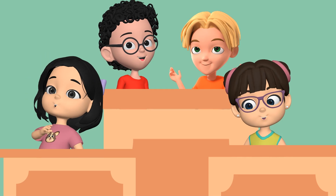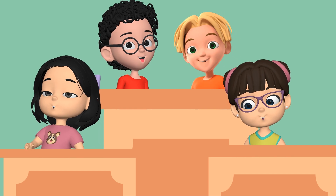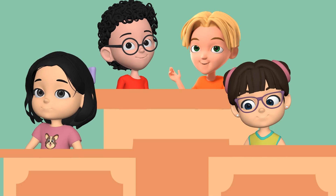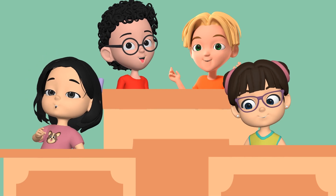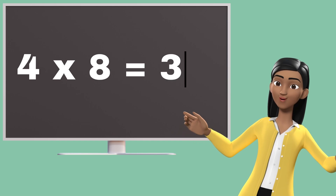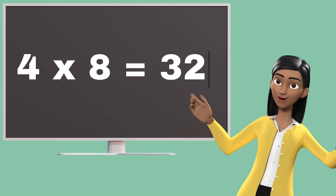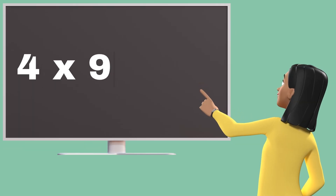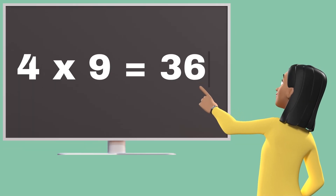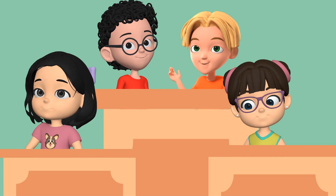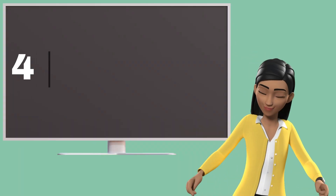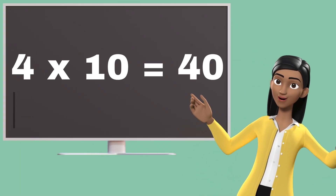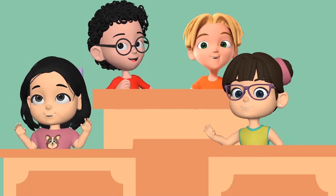Four sixes are twenty-four. Four sevens are twenty-eight. Four sevens are twenty-eight. Four eights are thirty-two. Four eights are thirty-two. Four nines are thirty-six. Four nines are thirty-six. Four tens are forty. Four tens are forty.